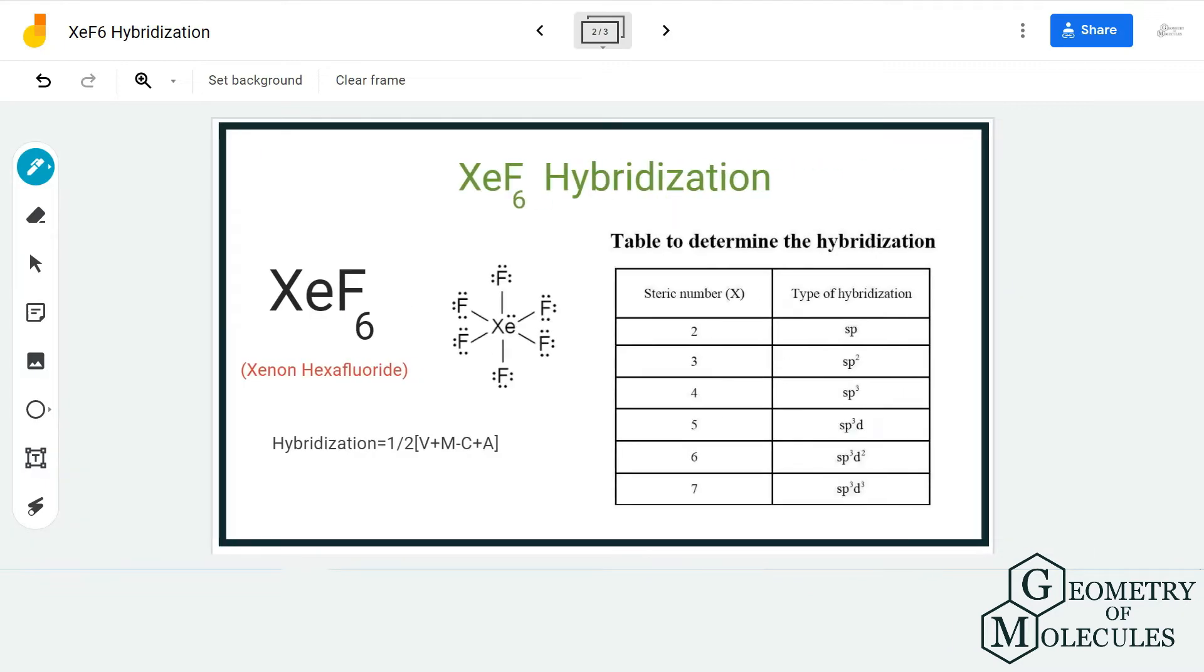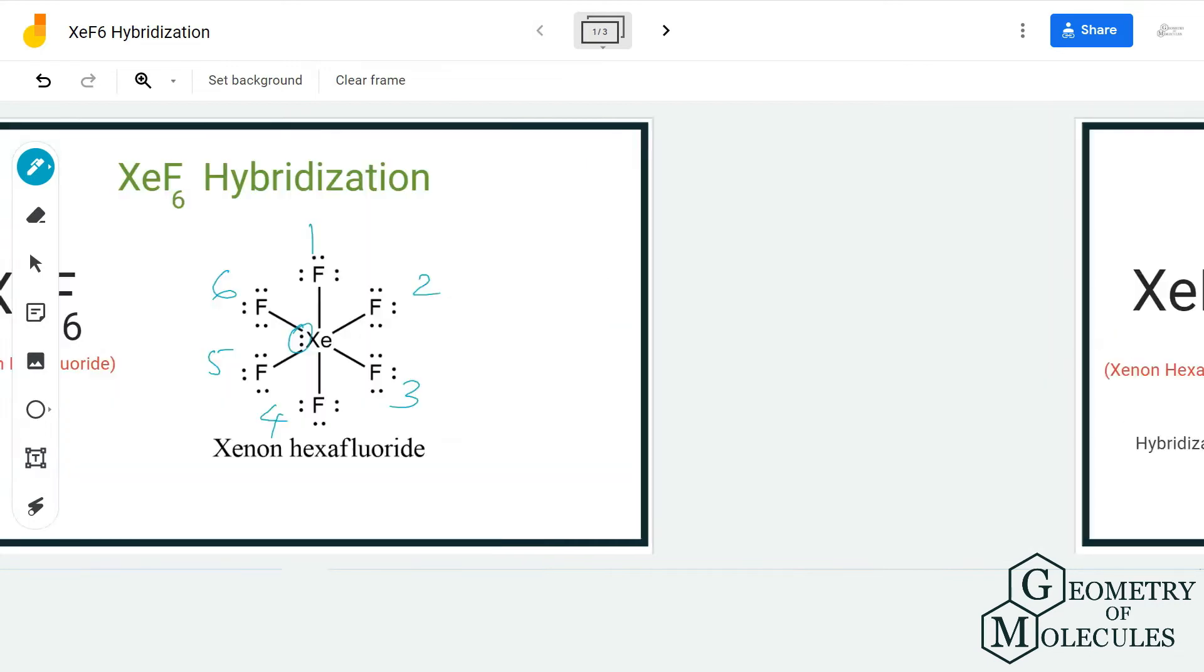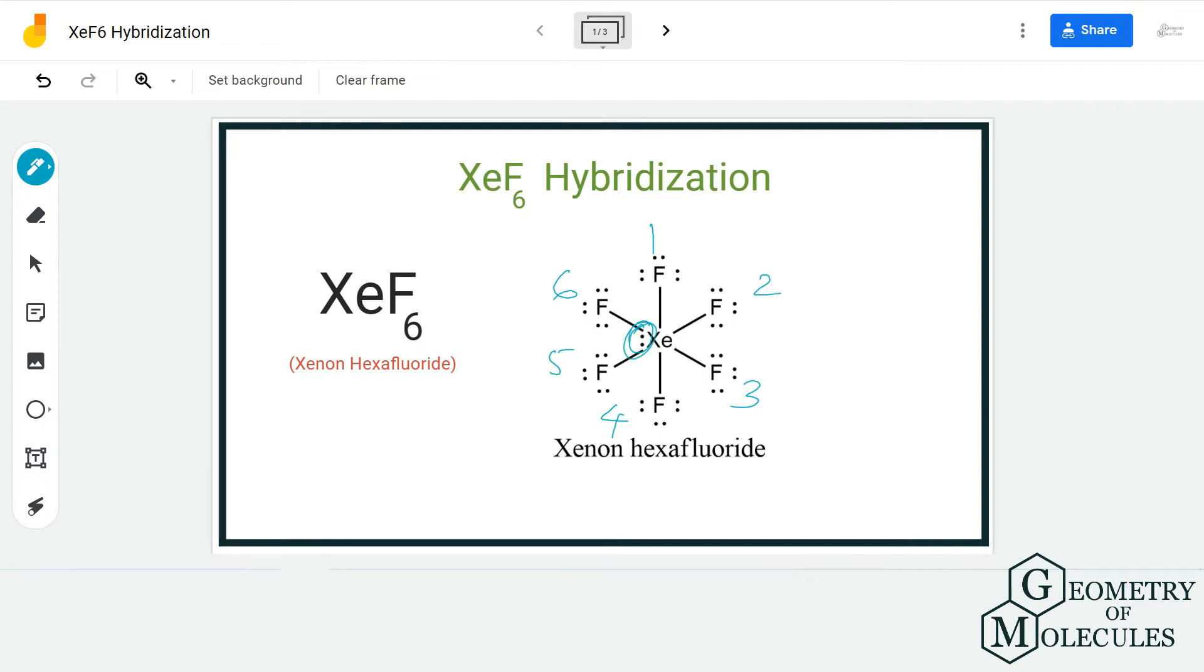Once you know this information about the molecule, it becomes really easy to find out its hybridization. Hybridization can be easily determined if you know the total number of electron regions around the central atom. Here xenon has seven electron regions - there are six bonding pairs of electrons and one lone pair or non-bonding pair of electrons.